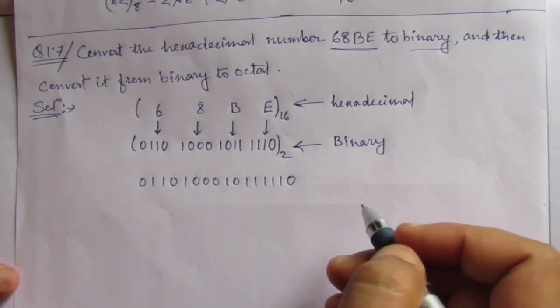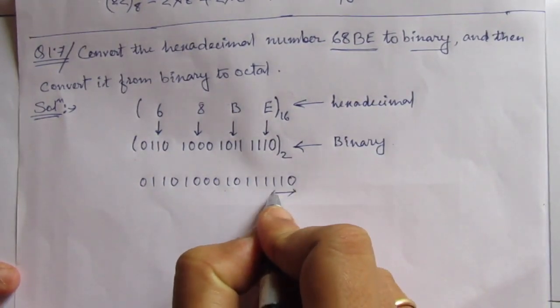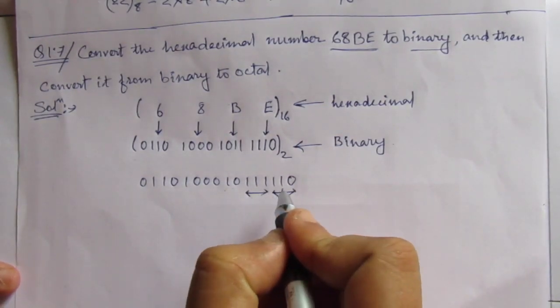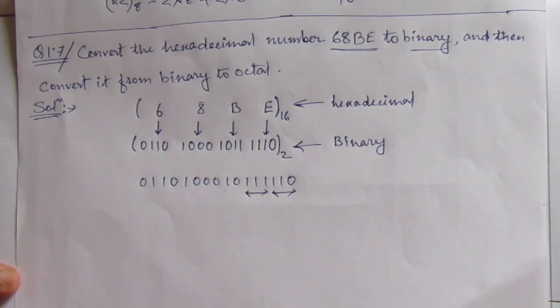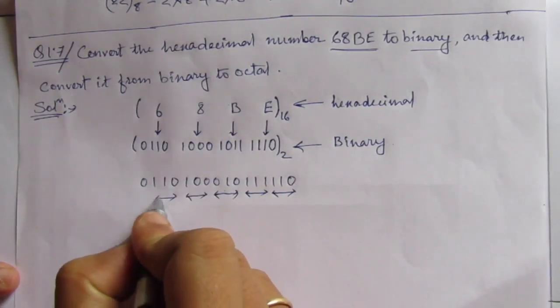For binary to octal conversion, what we have to do is take 3 bits, 3 binary bits, and directly convert them into their respective octal number. So we have to take like this: 110.